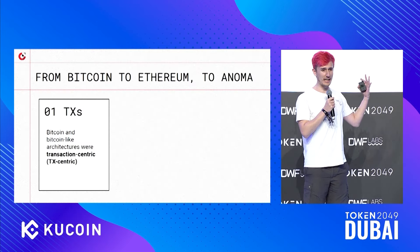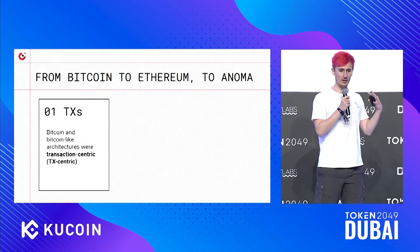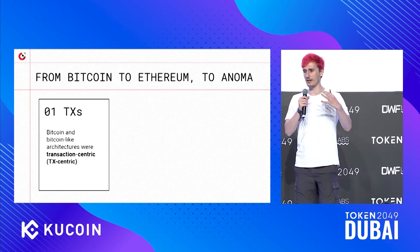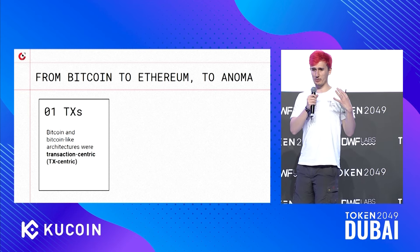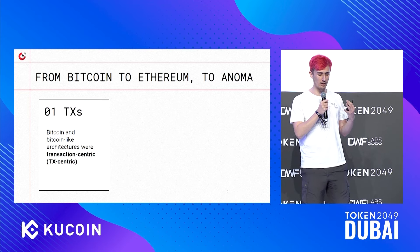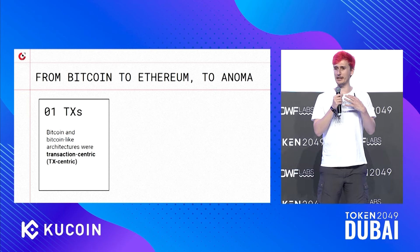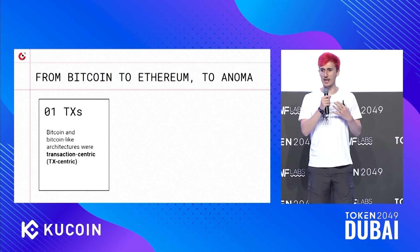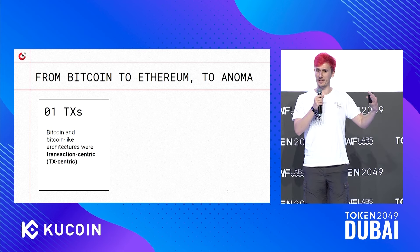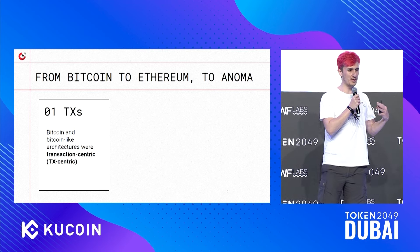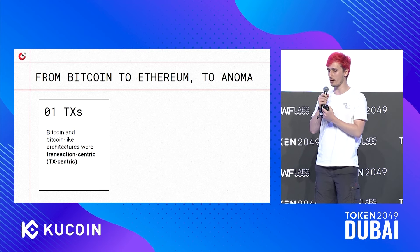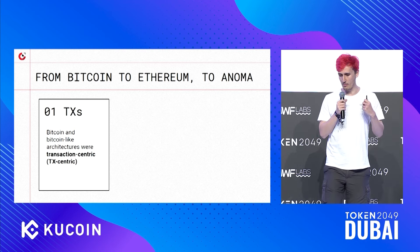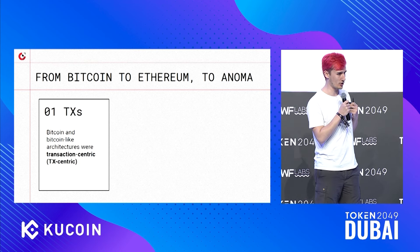In the beginning, it all started with Bitcoin and Bitcoin-like architectures. When you think Bitcoin, I'm also thinking Litecoin, Zcash, Monero — you name it. These are all fundamentally transaction-centric systems. They have limited scripting capabilities, so you can't build very complex applications, but they allow you to build some applications. They were really the forerunners, with things like colored coins or things like the global Bitcoin stock exchange.